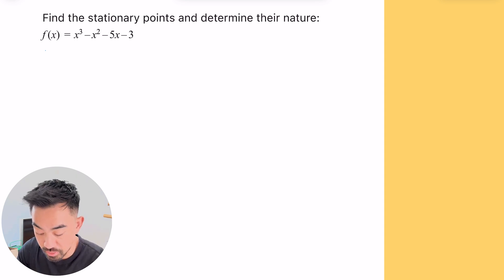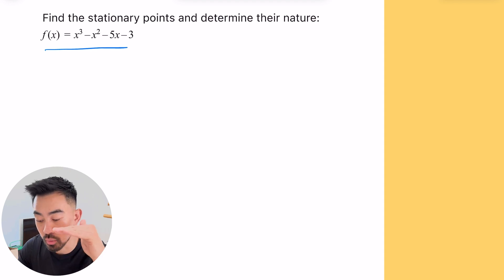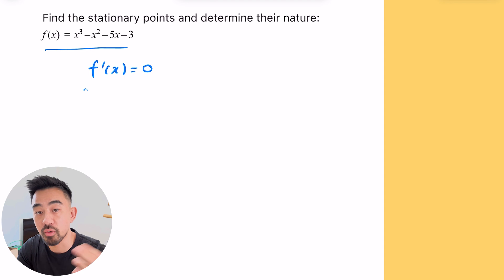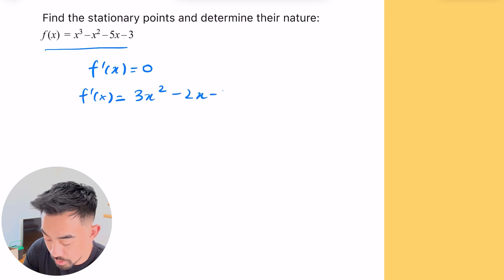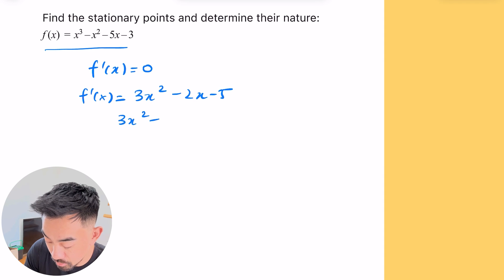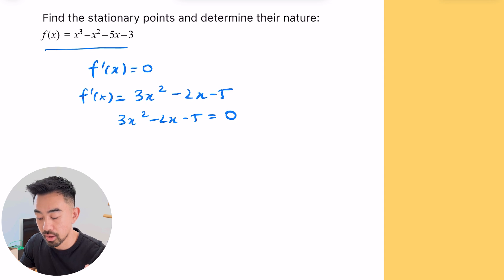The first one says find the stationary points and determine the nature of this function. For any stationary point, we're really thinking about when is the gradient flat — when is the gradient equal to zero. We find that by saying f'(x) equals zero. So f'(x) here will be 3x² minus 2x minus 5, and we solve that equals zero because that tells us where on the curve the gradient is zero.